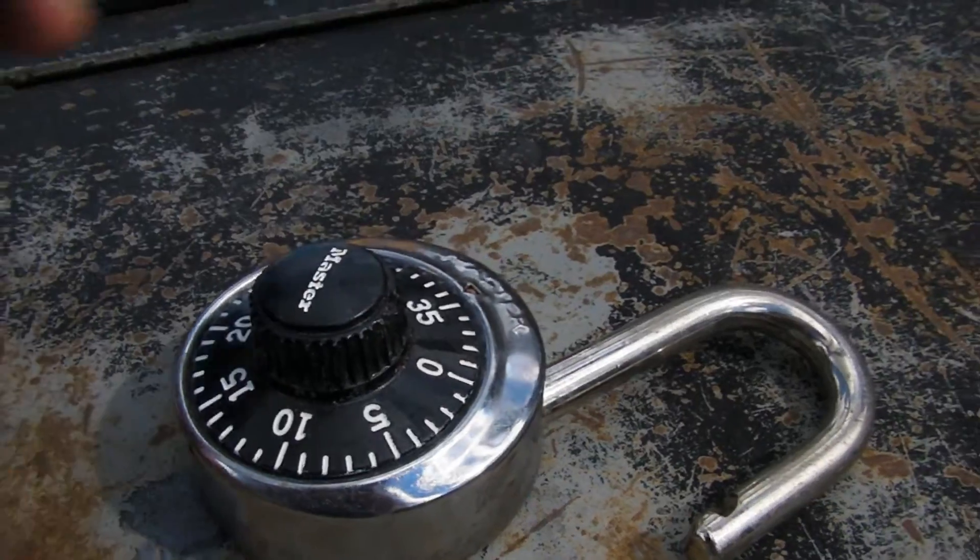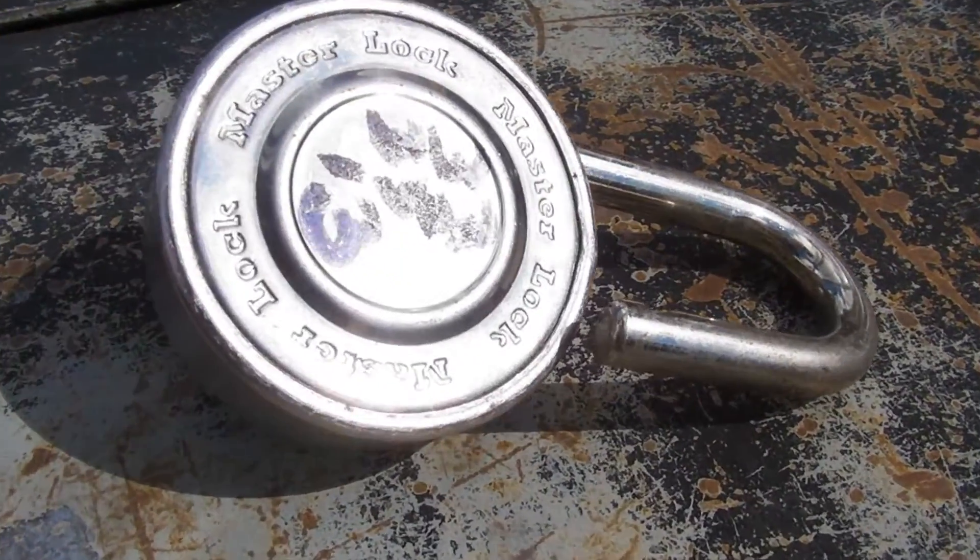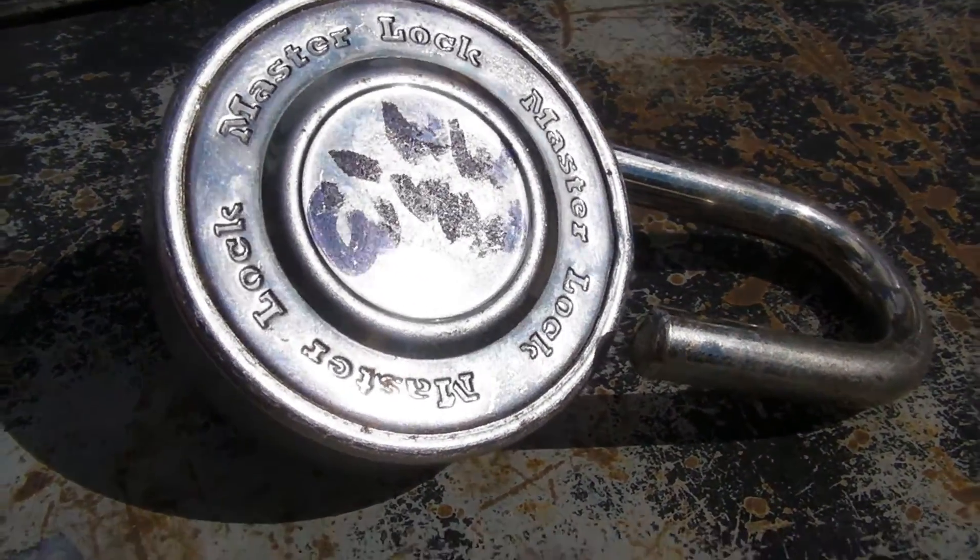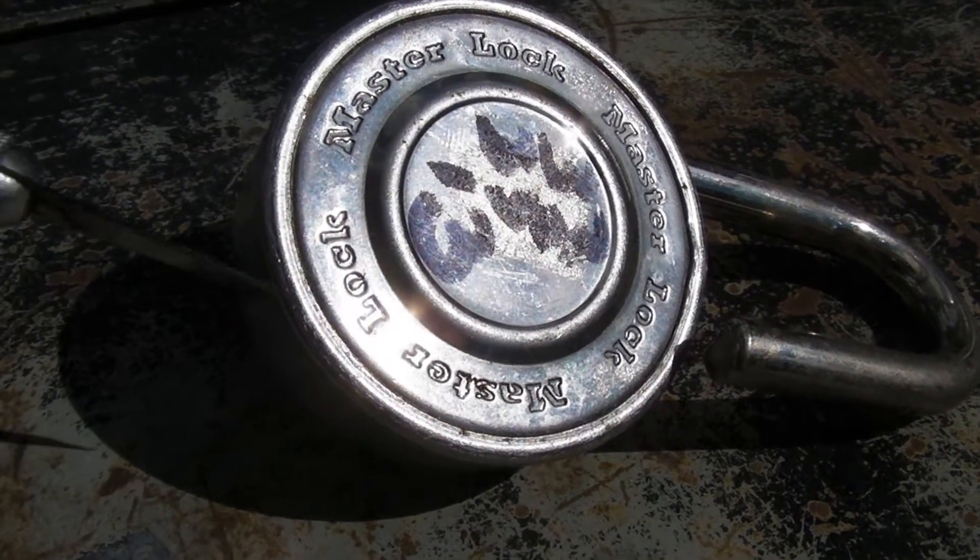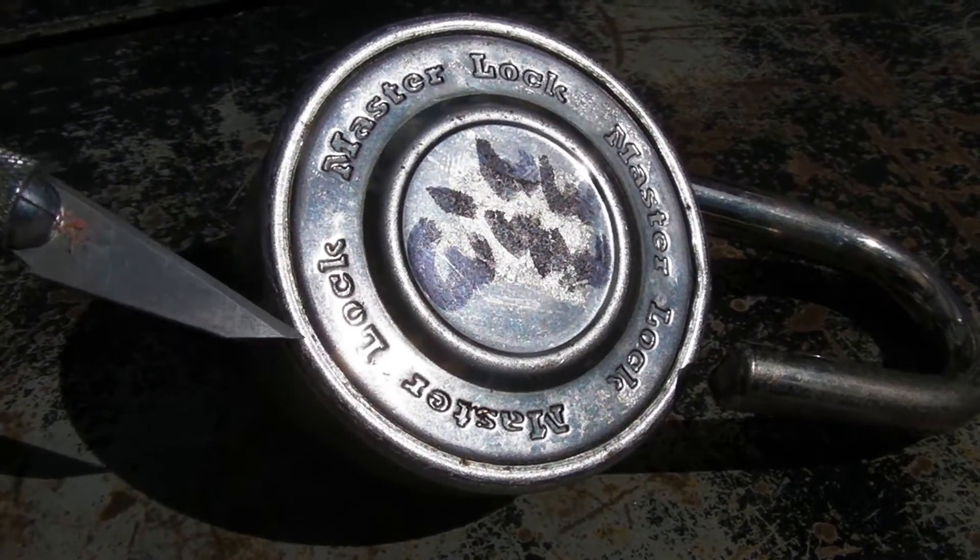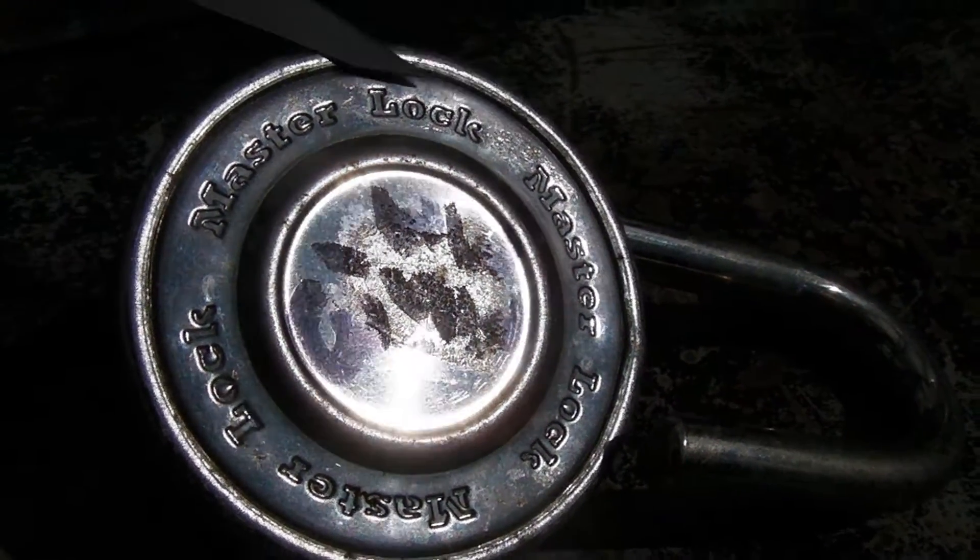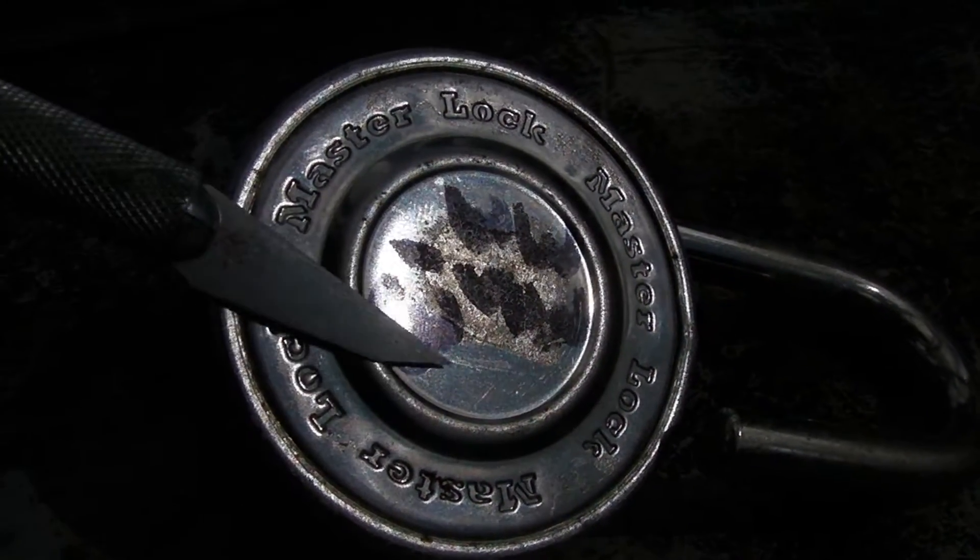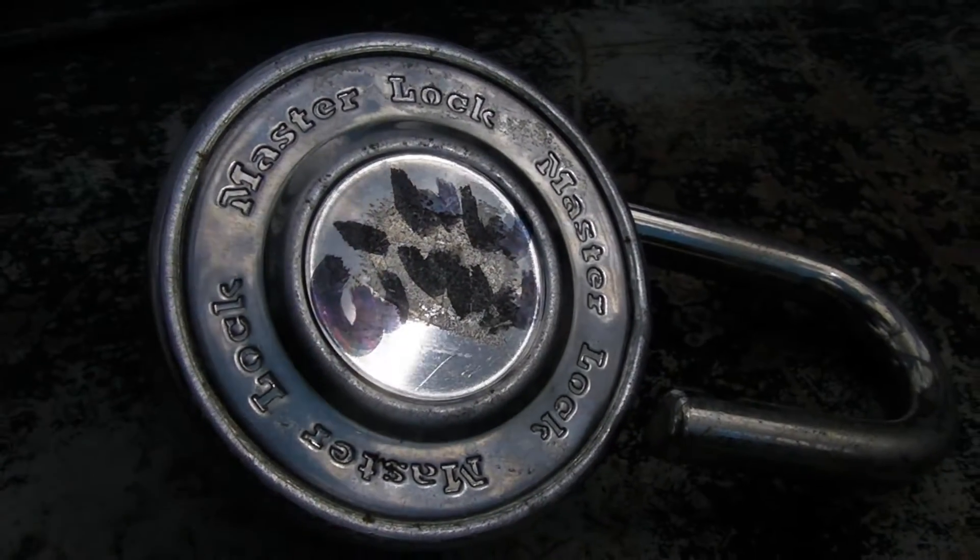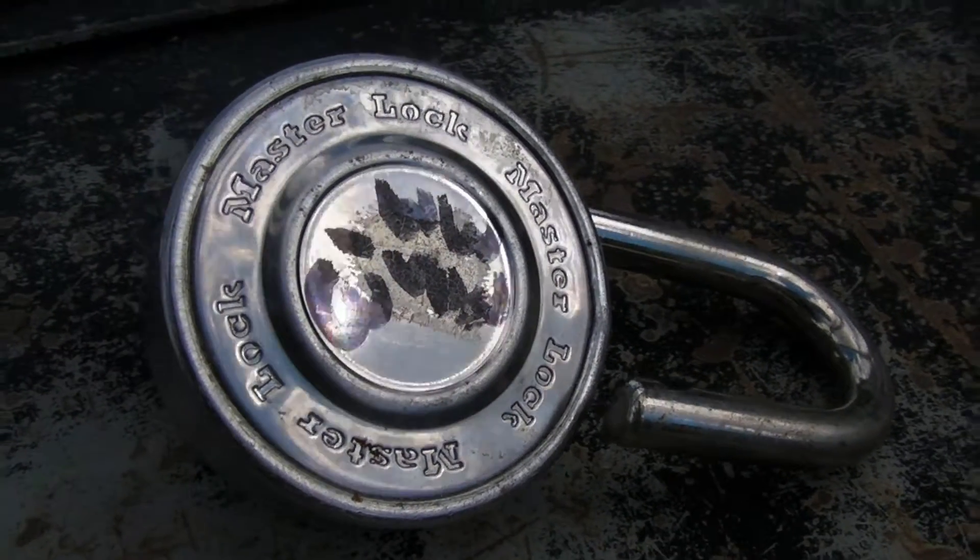But I want to keep this kind of intact so I can see the individual parts. So what I'm going to do is grind this lip off with the big metal grinder so that I can hopefully just slide this plate out and see what's inside, so hang tight.